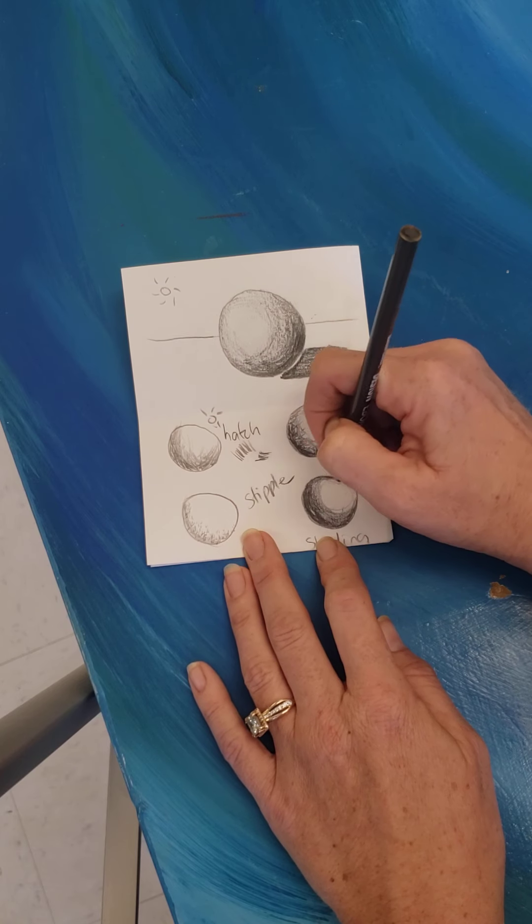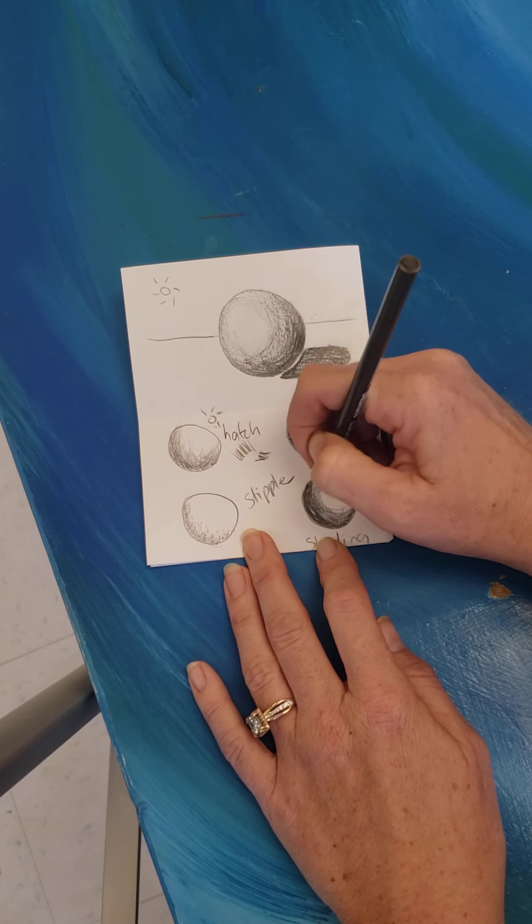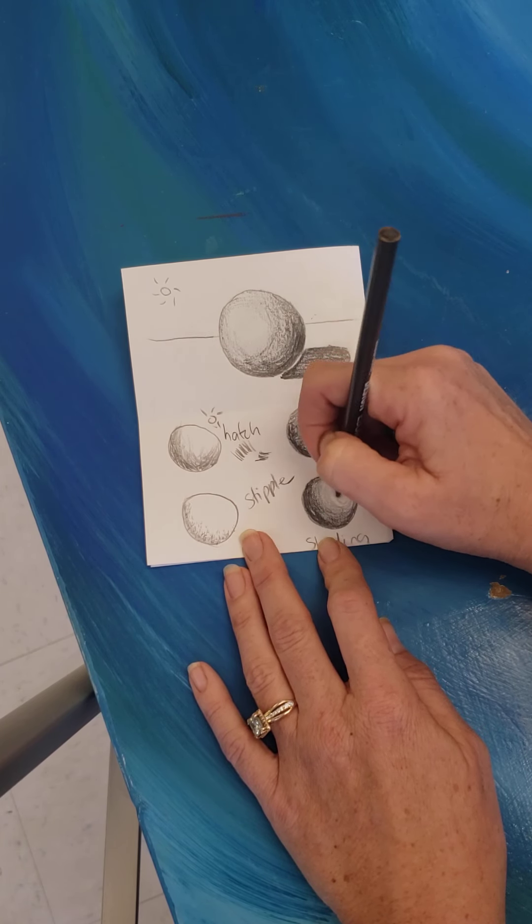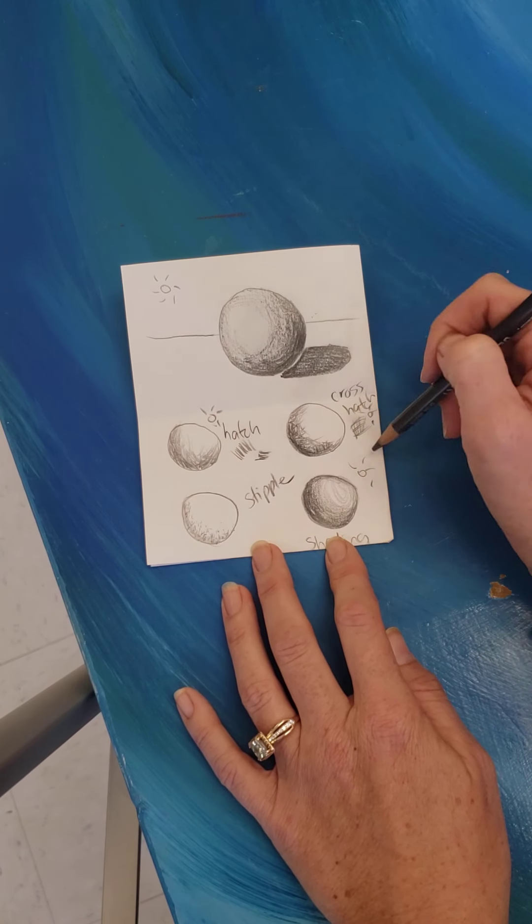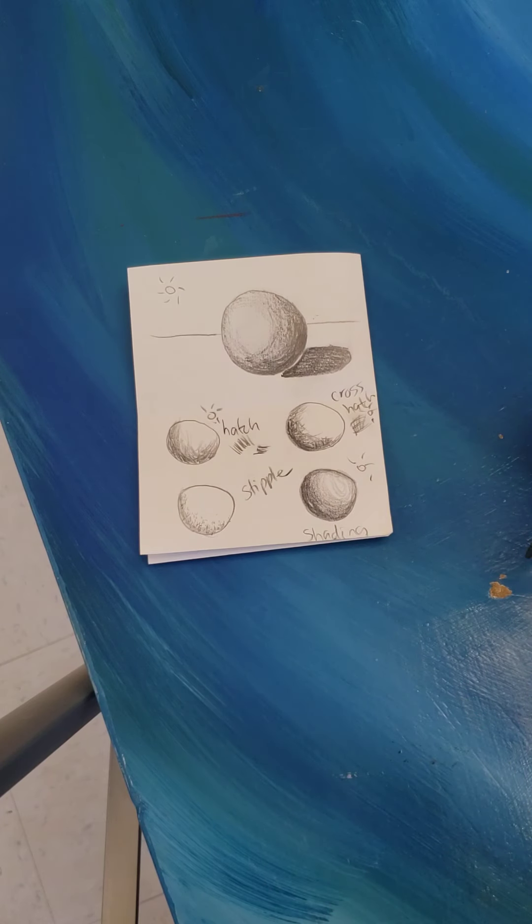Obviously I love shading, but sometimes it's not always the best option. Like if I'm drawing, like I said, an orange, it won't have that textured surface, but the stipple will help. So practice these today. Have a great day.